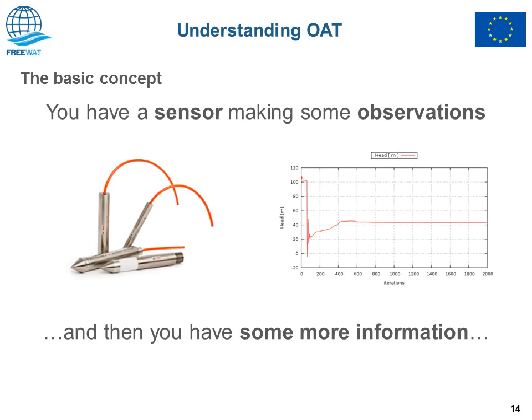The basic concept behind the whole OAT library is that, to create time series, you have a sensor which is capable of sensing the environment, and then you have observations which are the result of the sensing. You also have metadata that better describes in detail the type of sensor or information on the location of the sensor. These two components — the sensor that performs the sensing and the data describing the variation in time of the sensor property — are the basis of the time series.